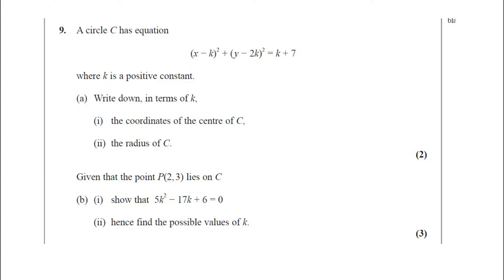Question number 9. A circle has equation x minus k whole square plus y minus 2k whole square equals k plus 7, where k is a positive constant. Part A: write down in terms of k the coordinates of the center of C and the radius of C. The question carries two marks.